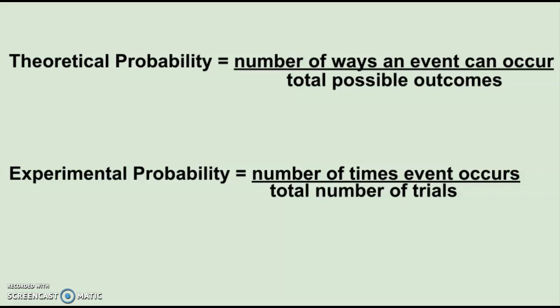Today, we're going to be shifting gears a little bit and focusing on experimental probability. Experimental probability is when you actually perform an experiment and you calculate your results. We find experimental probability by taking the number of times the event occurs and putting that over the total number of trials performed.